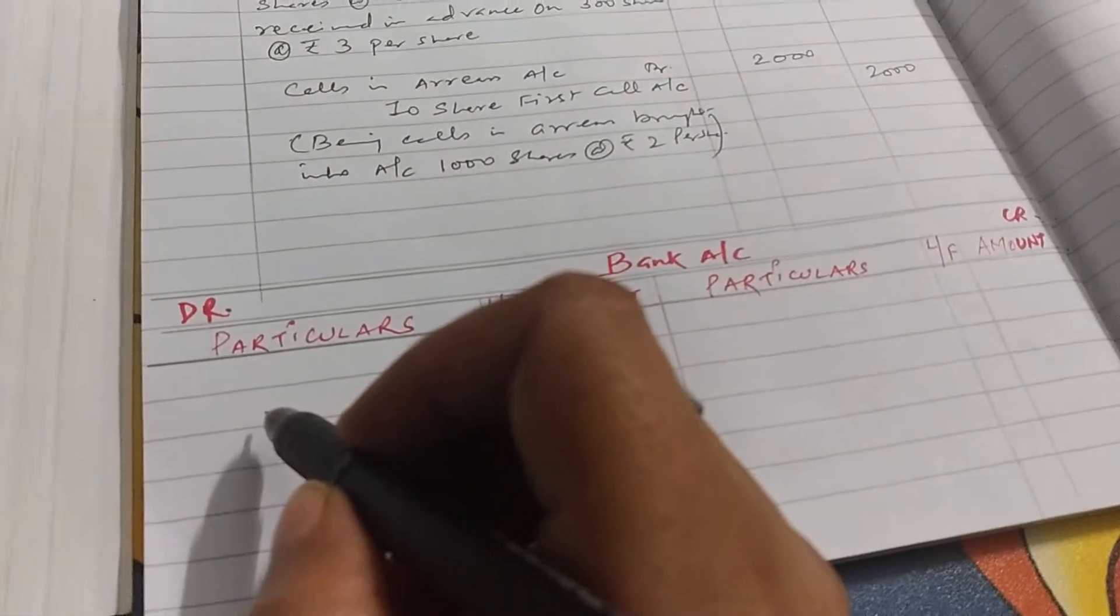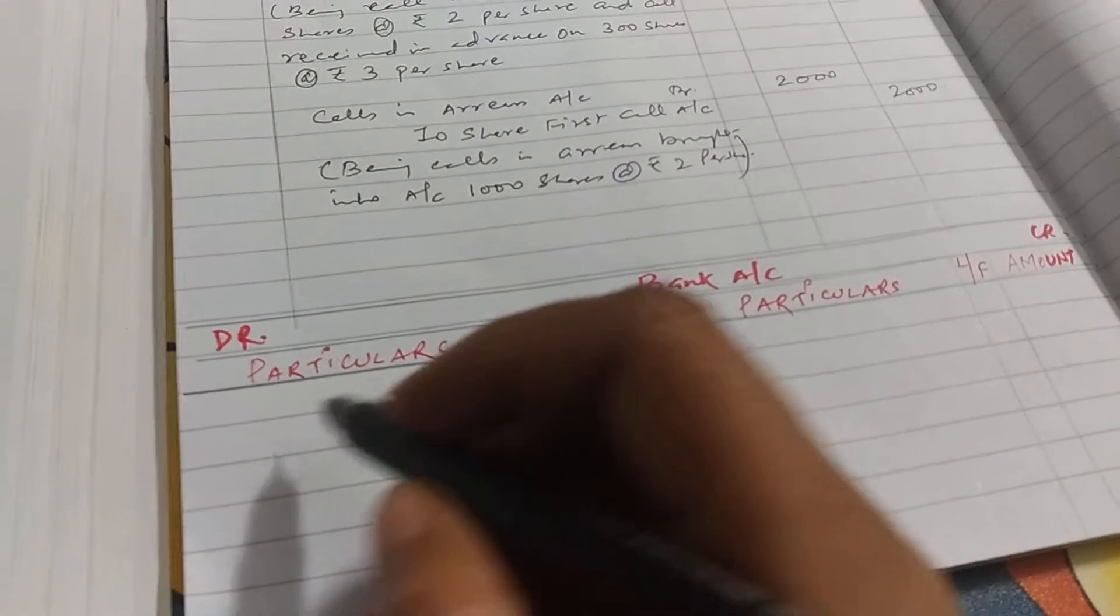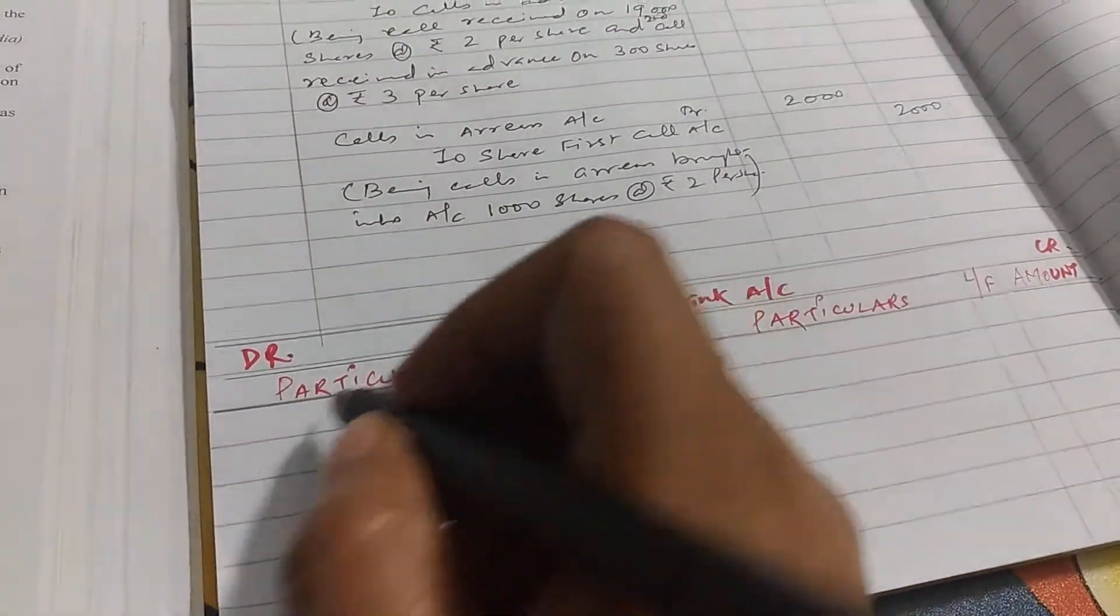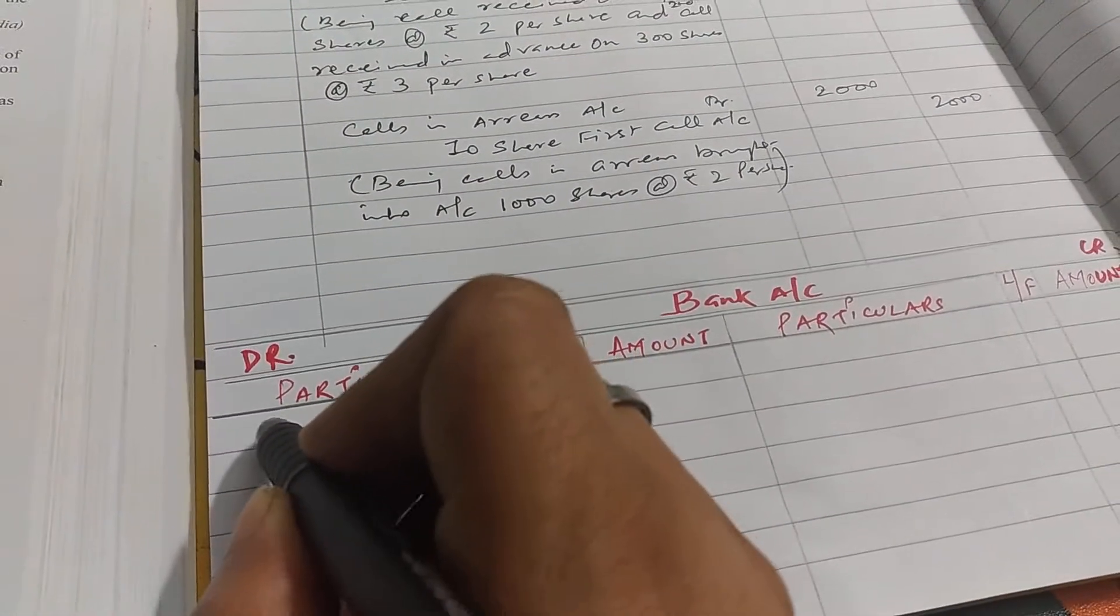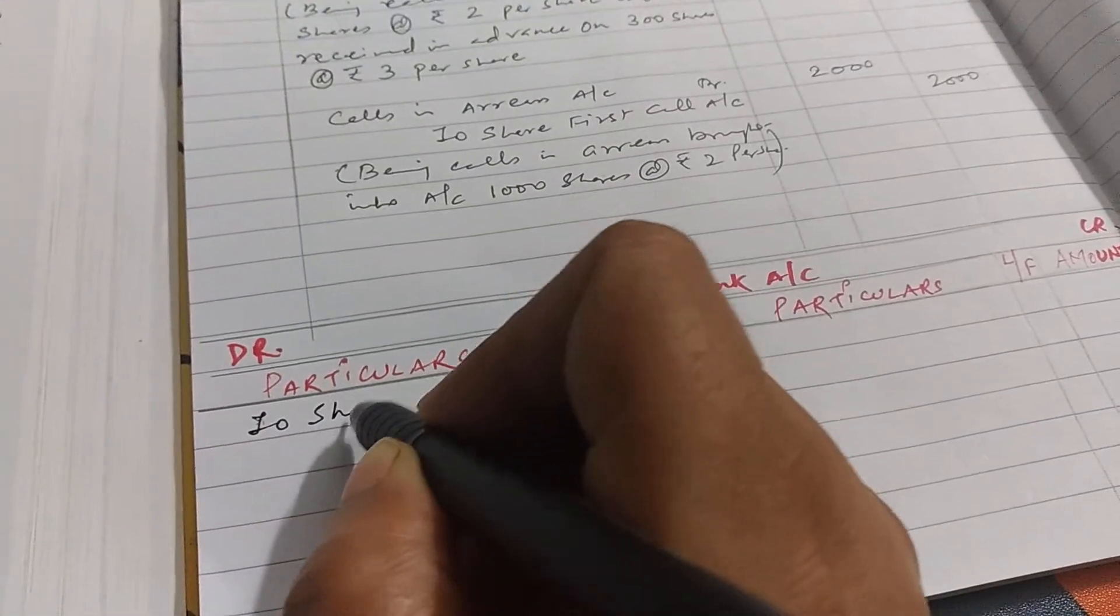In bank account, what we have to show first will be the first journal entry: bank account debit to share application account. So we have to write to share application account.